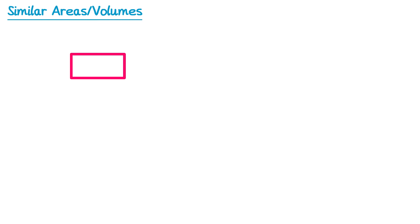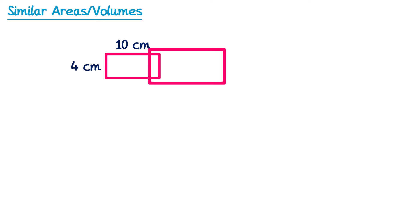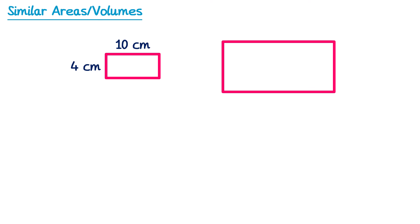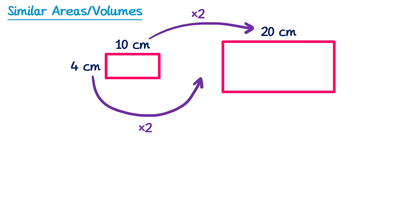We're going to start by taking a rectangle which is 10cm x 4cm. Then we're going to enlarge this rectangle to create a similar rectangle by scale factor 2. This will mean all of the lengths of the rectangle will be twice as long. So on the top we have 10cm and if we double that it becomes 20, and on the left hand side it's 4cm and if we double that it becomes 8. So the lengths of the rectangle were multiplied by 2.